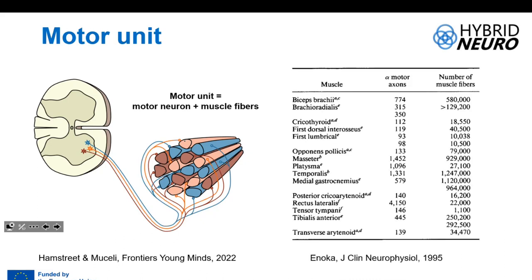In one muscle we have a certain number of motor neurons, and this number depends on the muscle function. A small hand muscle like the first dorsal interosseous has about 100 motor units. But a very powerful muscle such as the masseter, or a muscle from the thigh, has much more power and accordingly more motor units.